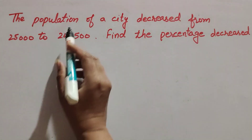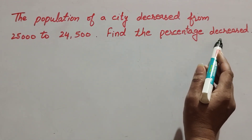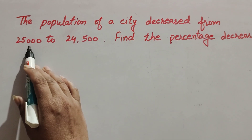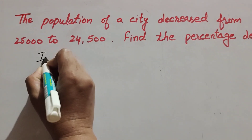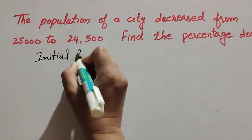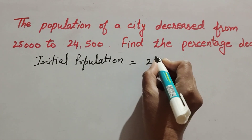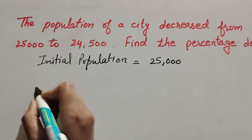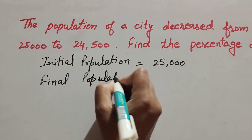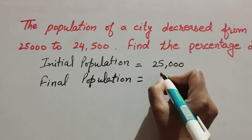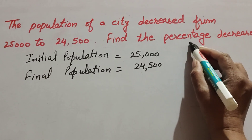Hello guys, welcome to my channel. In this video we discuss: the population of a city decreased from 25,000 to 24,500 — find the percentage decrease. The given values are: initial population at the start and final population at the end. Initial population is equal to 25,000, and final population is equal to 24,500.